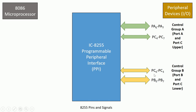All these ports — Port A, Port B, and Port C — are connected to the peripheral devices. There is one control register inside IC8255 which controls which of these ports is connected to which peripheral device, and how these ports should act — whether as an input device, output device, or for bi-directional data transfer.